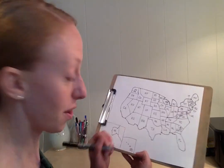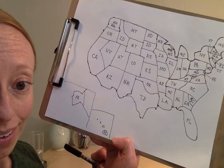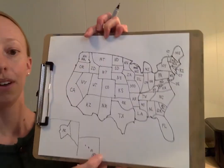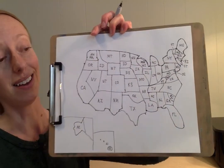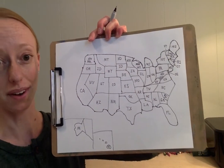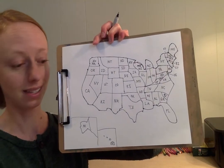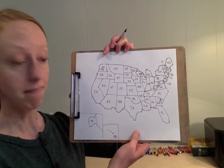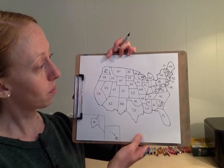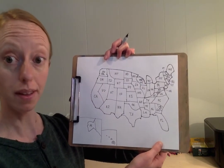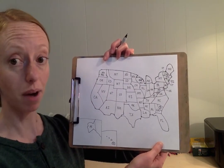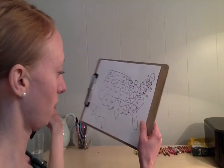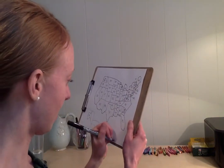Hawaii's postal code is HI. Alright, so this is my map of the United States. Normally we sign our name in the bottom right corner, and I've got some space here so I'll go ahead and do that.